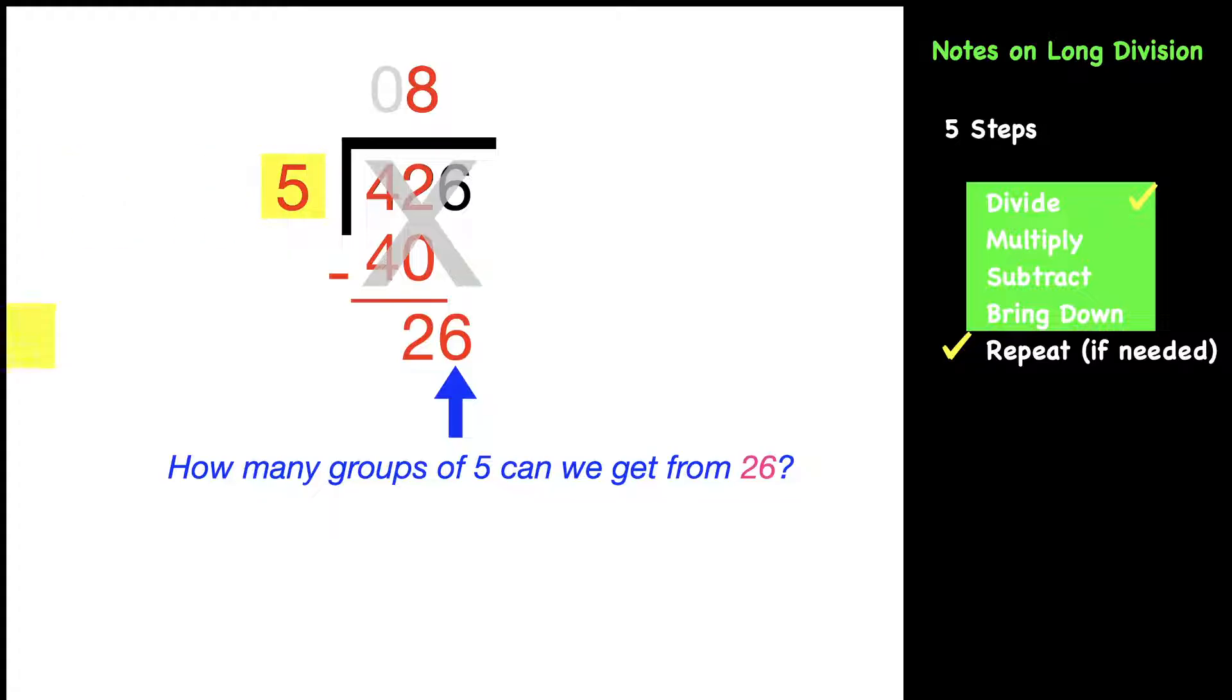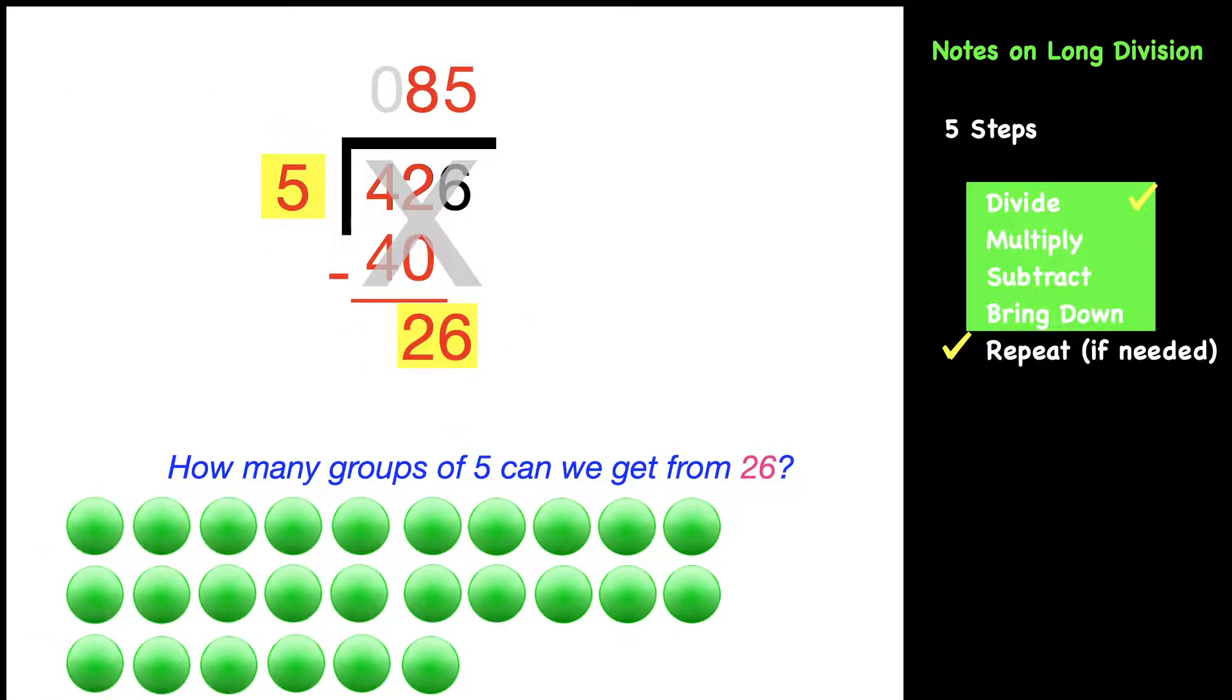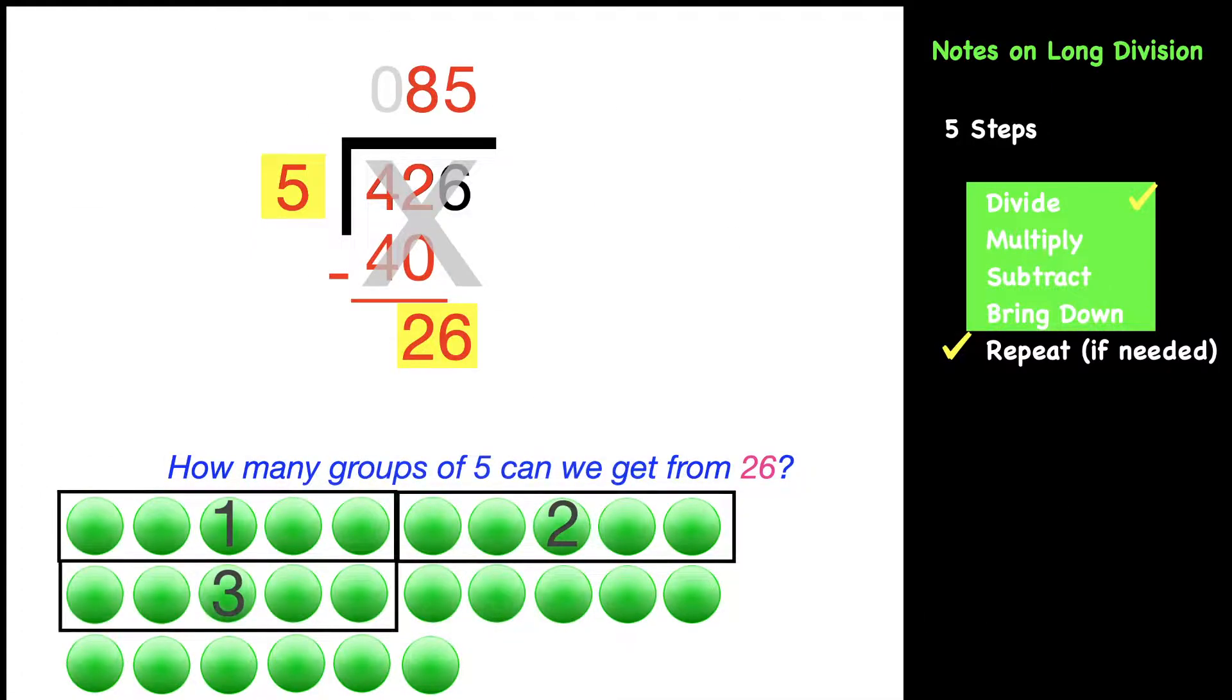So what we're going to divide is ask yourself, how many groups of five can we get from 26? That answer would be five. And I can show that with the models with 26 Skittles. One group of five, two, three, four, five groups. That's where we got that five. And notice that there's one left over.